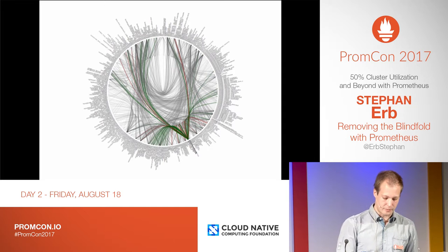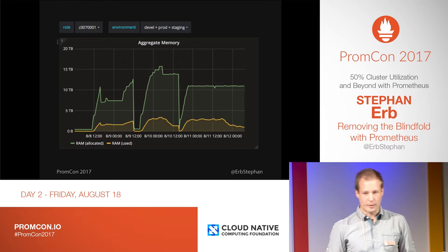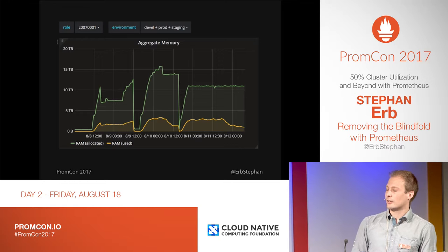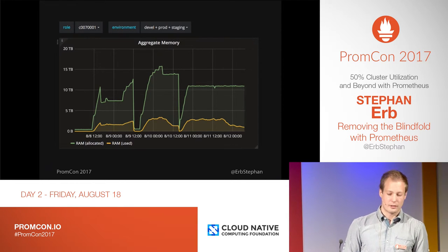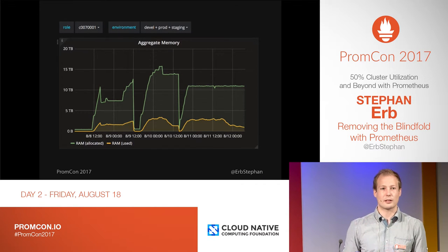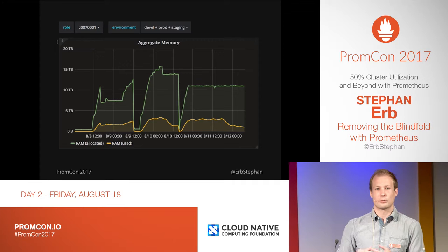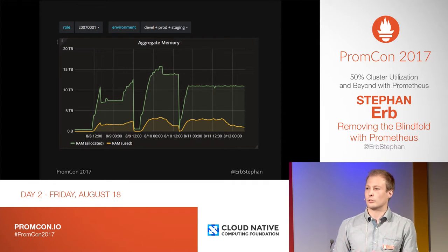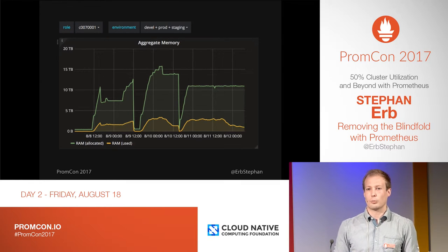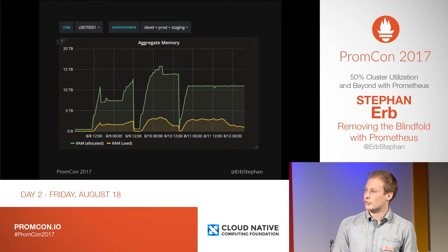The first thing we did was attach two labels to everything we run on shared infrastructure. The first one is 'role', which ties back into our business domain — it's a unique ID for a person or business service or project. The second one is a simple 'environment' tag that tells us the lifecycle stage of a service: whether it's development or already running in production.